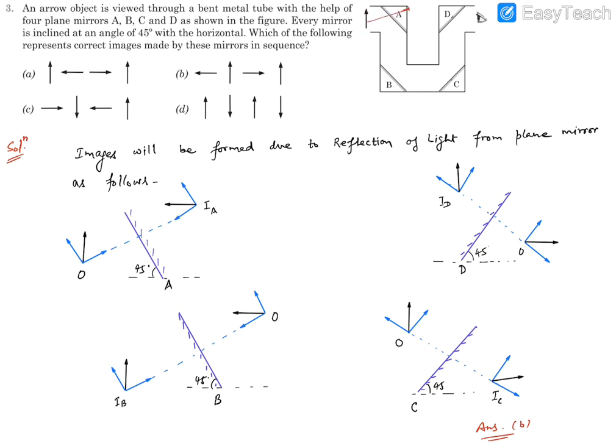So that will be first image and we need to choose out of these options which one is going to be the orientation of the first image. Then this first image is going to act as the object for the second mirror and there will be formation of second image, then there will be formation of third image, then there will be formation of fourth image, and finally the eye is going to watch or see the fourth image. Now how this image is going to be formed due to reflection of light from a plane mirror, they have been shown in these diagrams. So ray diagrams or simply image formation diagram.